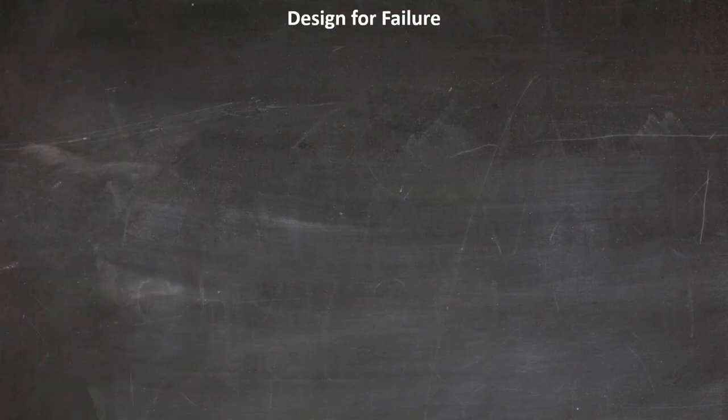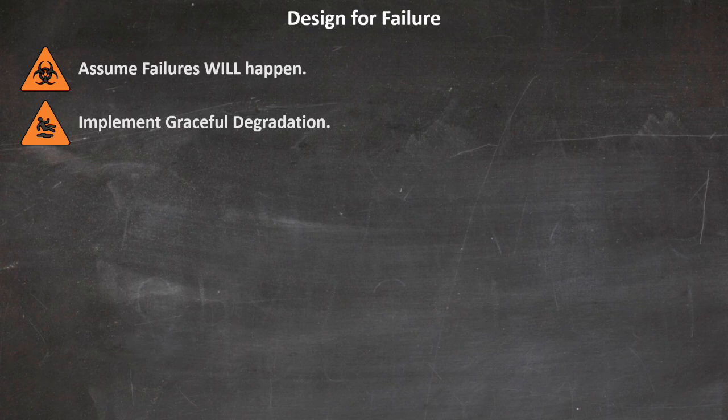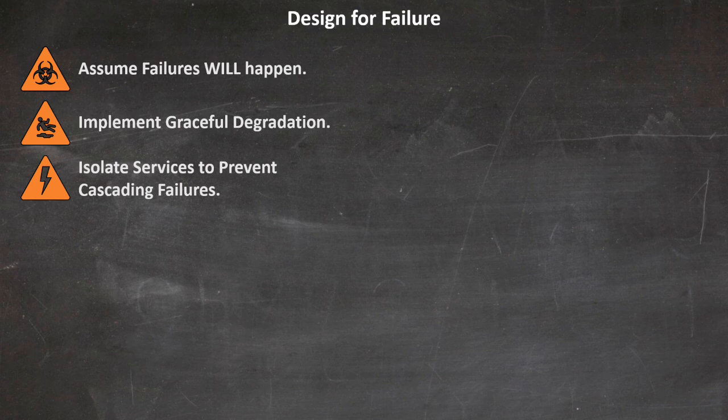When it comes to building resilient microservices, two best practices stand out. First, design for failure from the start. This means anticipating potential points of failure and creating systems that can withstand and recover from them. Key principles include assuming that failures will happen, implementing graceful degradation to maintain partial functionality, and isolating services to prevent cascading failures. Techniques such as the circuit breaker pattern can stop requests to a failing service, while the bulkhead pattern isolates components. Using timeout and retry mechanisms with exponential backoff helps manage transient issues effectively.